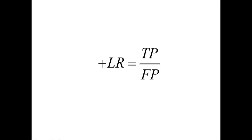Another way to look at it is the ratio of true positives to false positives. You should note that for the positive likelihood ratio, you still need to use the column percentages — 0.80 and 0.30. If you use the raw numbers, in most cases your calculation will come out incorrectly. In this case the calculation still works because we have even numbers of people with and without the disease, but in most calculations it will be incorrect. So use the column percentages, even though conceptually this is the ratio of true positives to false positives.